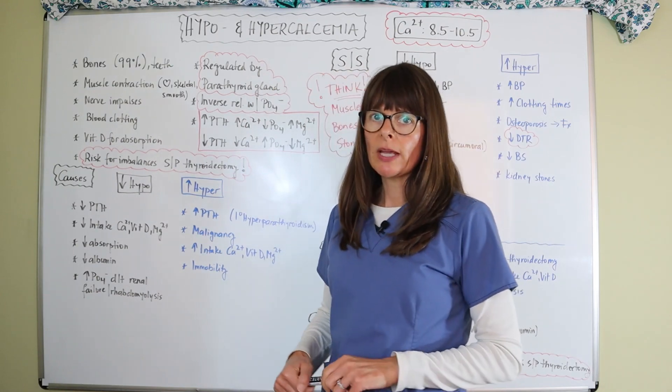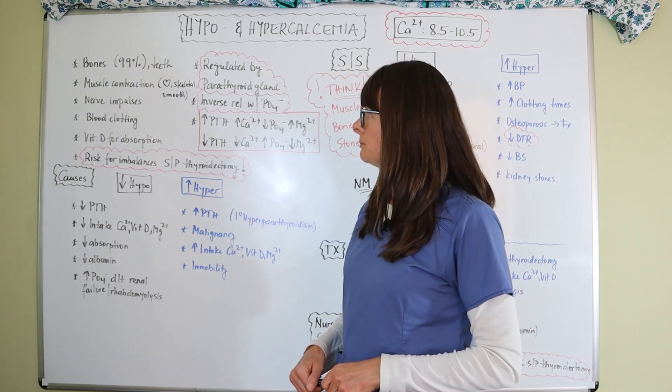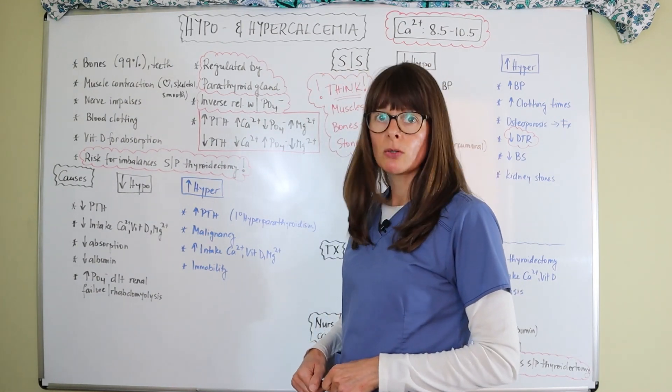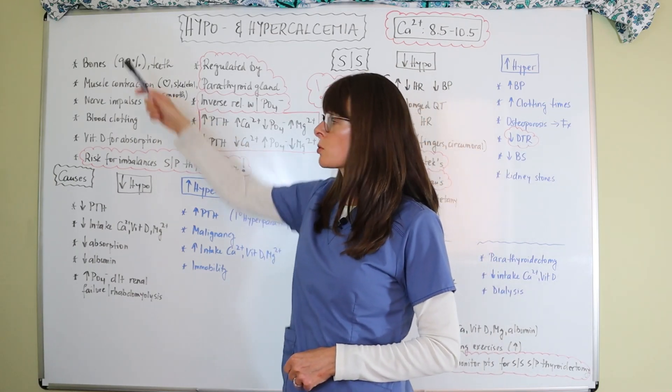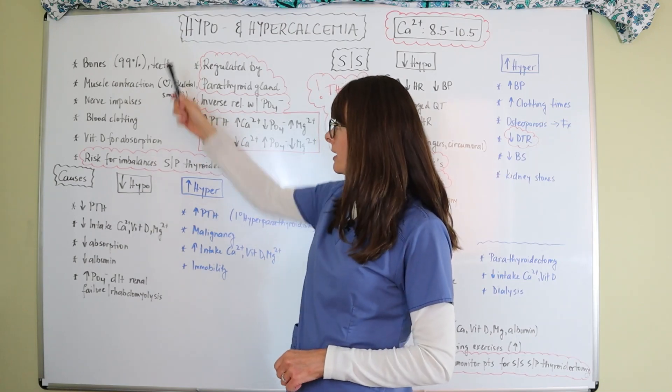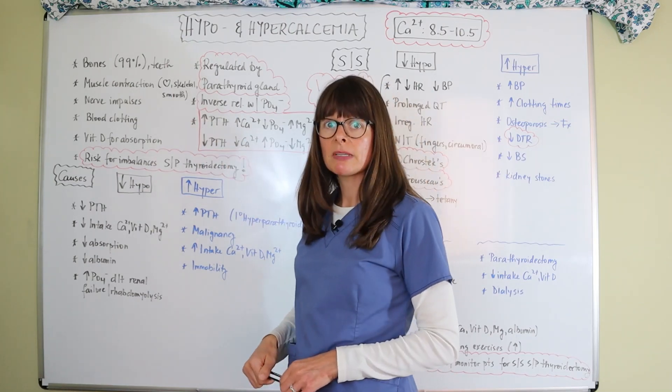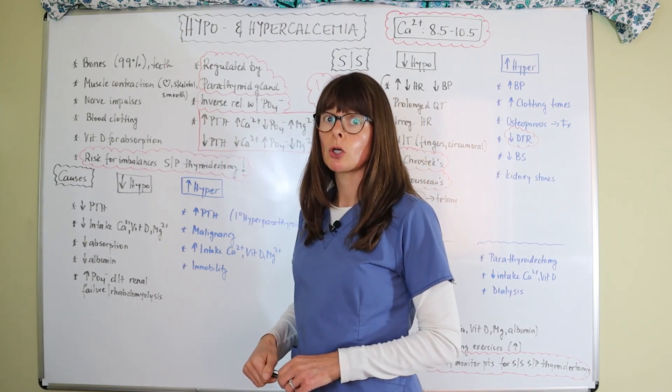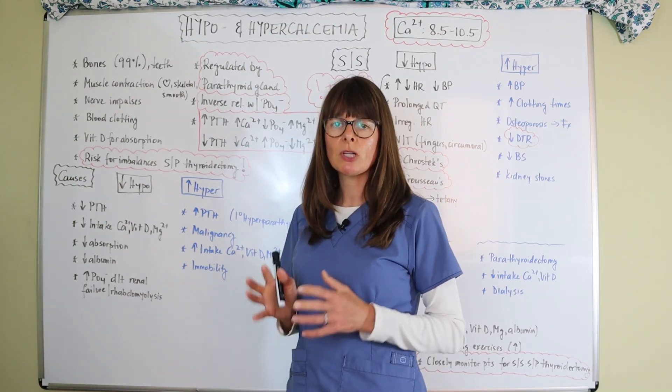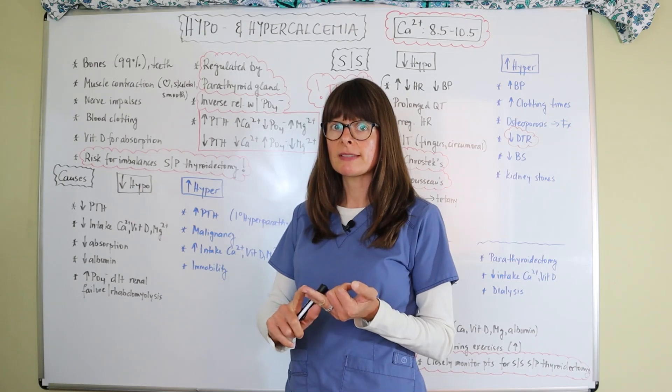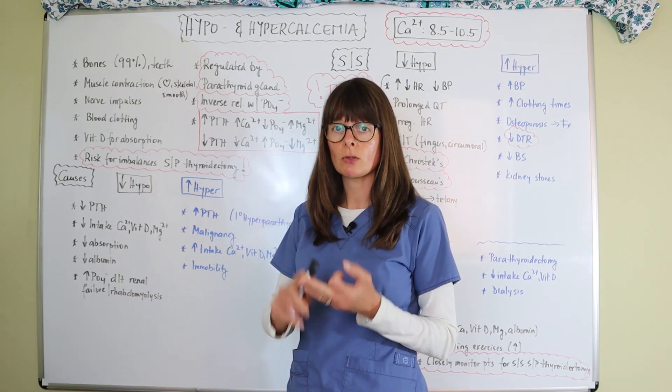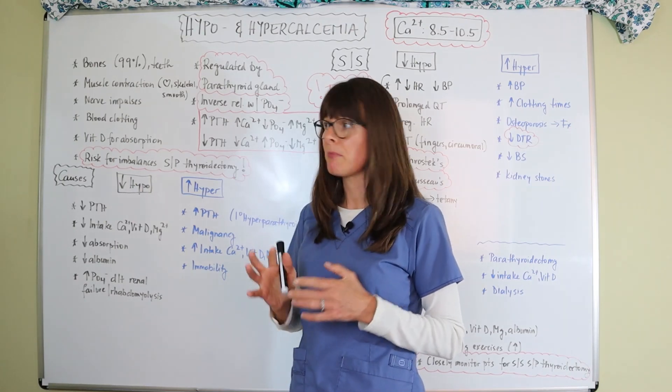As a quick reminder, calcium in the body is mostly abundant in the bones. 99% of the calcium we have is stored in bones as well as in teeth. But calcium is also responsible for muscle contraction. And whenever we talk about muscles, we have to think about cardiac as well as skeletal and smooth muscles, so they all can be affected by imbalances.